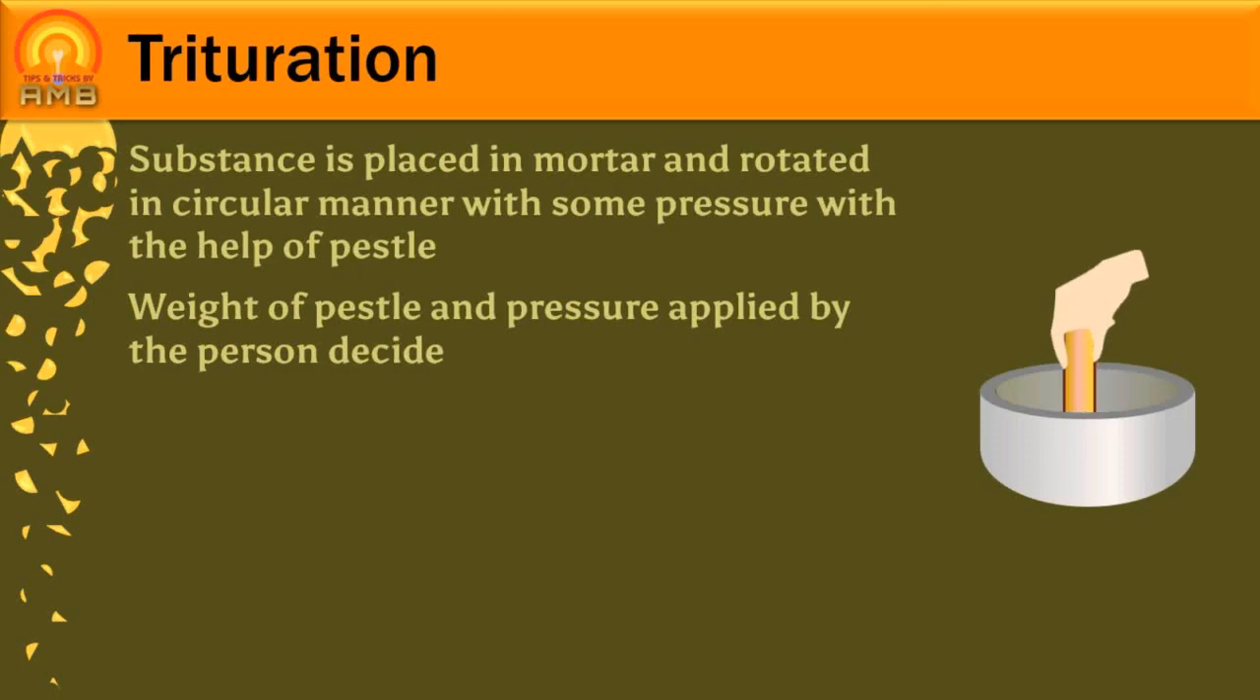Whenever we think about mortar and pestle there is a term associated with it: trituration. So what is trituration? The substance is placed in mortar and rotated in a circular manner with some pressure with the help of pestle. It is called as trituration. Weight of pestle and pressure applied by the person decides the degree of pulverization. Crystalline and brittle substances are pulverized by this method. It is also used for mixing of powders.